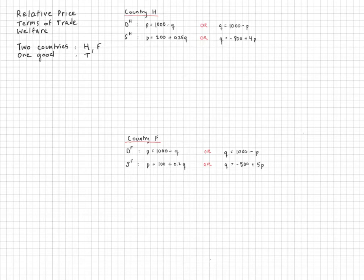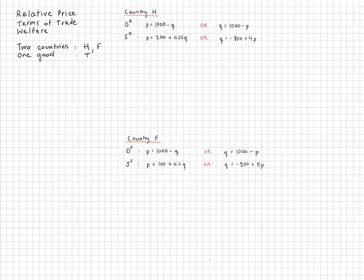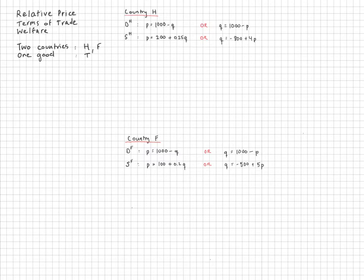I have specified a demand curve and a supply curve for country H, and the same for country F. Consumers are exactly the same in the two countries — they have the same demand curve — but because of various differences such as different access to technology, different access to resources, and different prices for resources, the two countries' supply functions are different. I put both functions in inverse form and in regular form so you can go from one expression to the other.